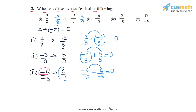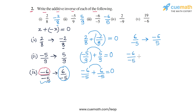We can write 6/-5 more conventionally in rational numbers — when one of the numerator or denominator is negative, we write the negative sign in the numerator. So 6/-5 can also be written as -6/5. Therefore the additive inverse of -6/-5 is -6/5. Alternatively, the original number -6/-5 can be simplified by dividing both numerator and denominator by -1, giving 6/5, and its additive inverse is simply -6/5.